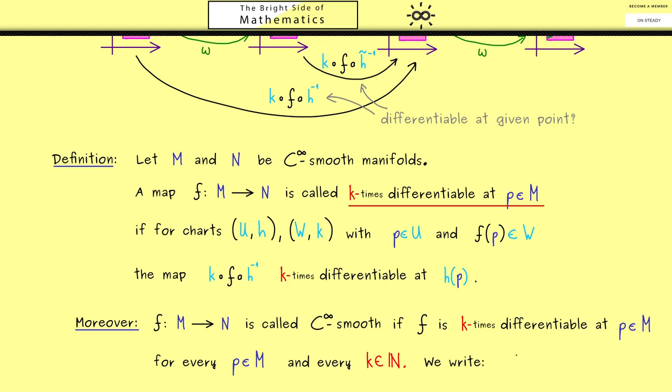In addition, we also have a nice notation for such functions. We simply write f as an element of C^∞(M). And if the codomain is not clear at all, we also have to put that in, so we write comma N. However, often the codomain will be simply the real number line R, and then we will omit it here. Okay, now later we will talk more about the structure of this special set here, but first we should talk about examples of smooth maps.